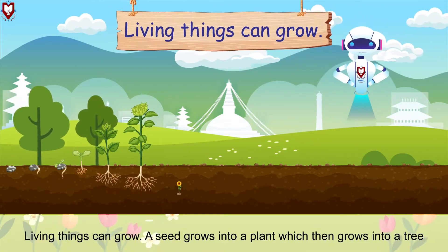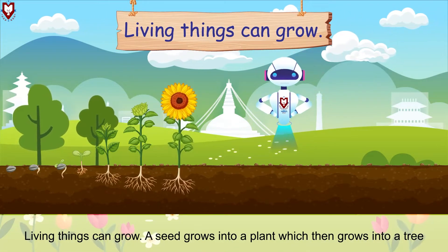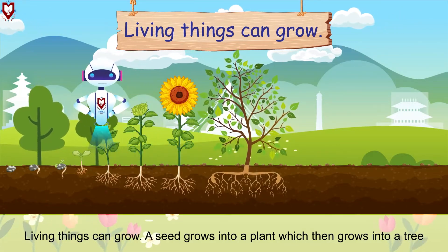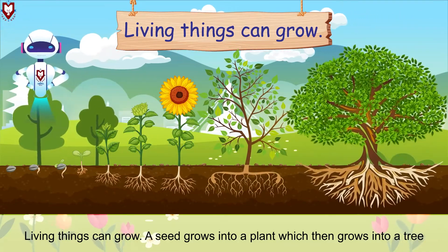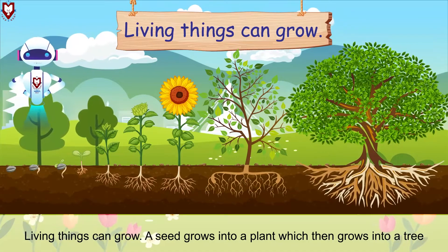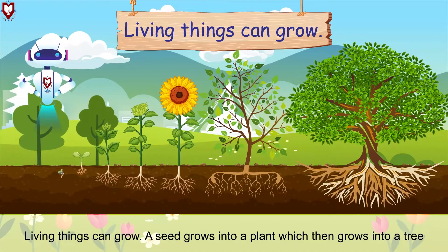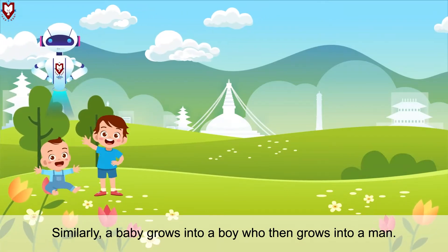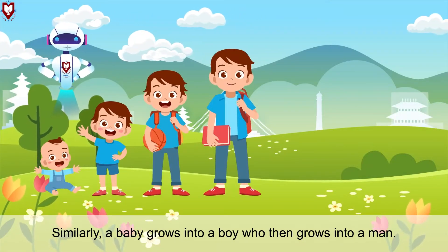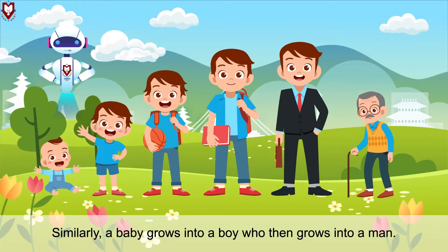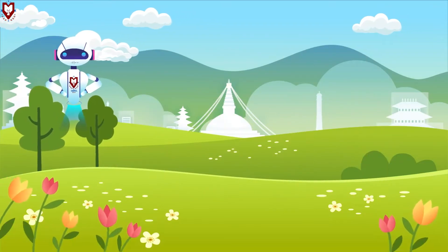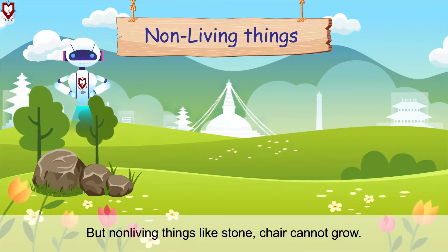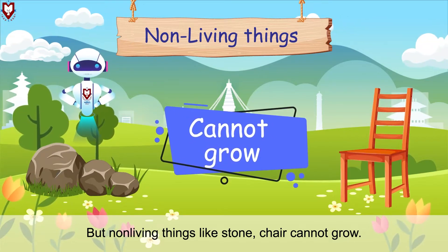Living things can grow. A seed grows into a plant which then grows into a really big tree. Similarly, a baby grows into a boy who then grows into a man. But non-living things like stone, a chair cannot grow.